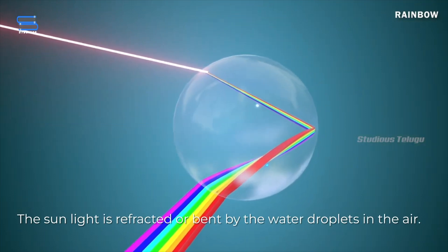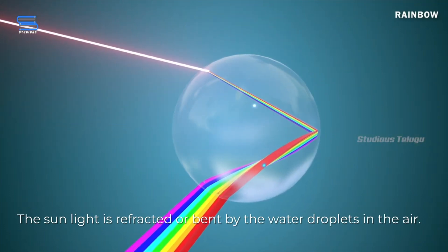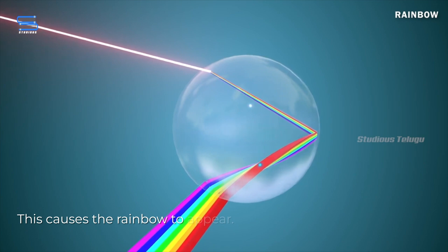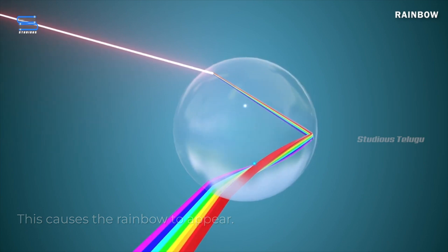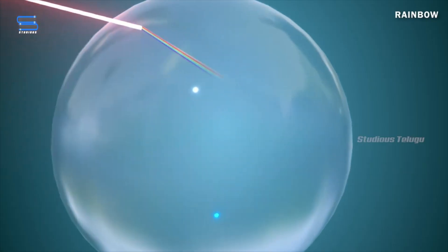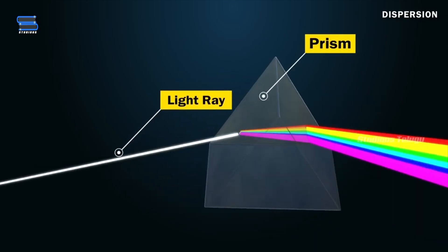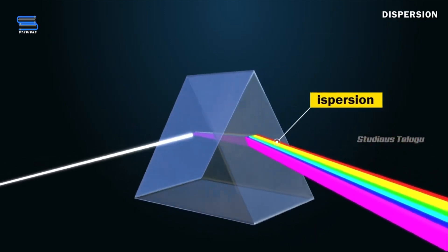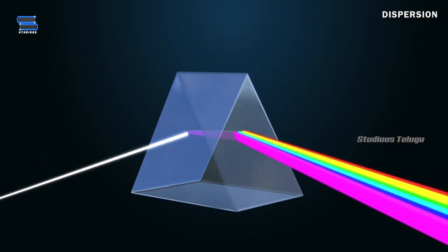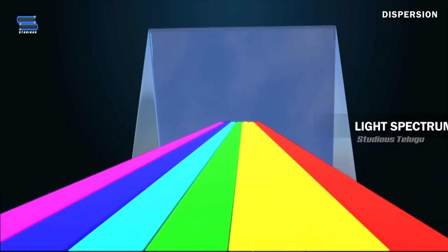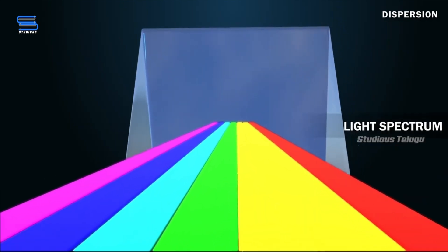The sunlight is refracted, or bent, by the water droplets, and this causes the rainbow to appear. A close-up of a water droplet shows how sunlight is refracted. The water droplets in the air act like a prism, and they split the sunlight into its component colors.